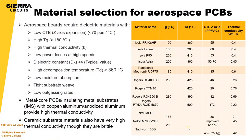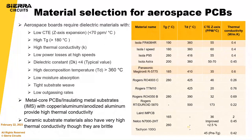In terms of material selections for aerospace PCBs, you should select materials that have properties like low CTE, low moisture absorption, no or low outgassing, and of course high thermal conductivity. These are some things you should look out for.